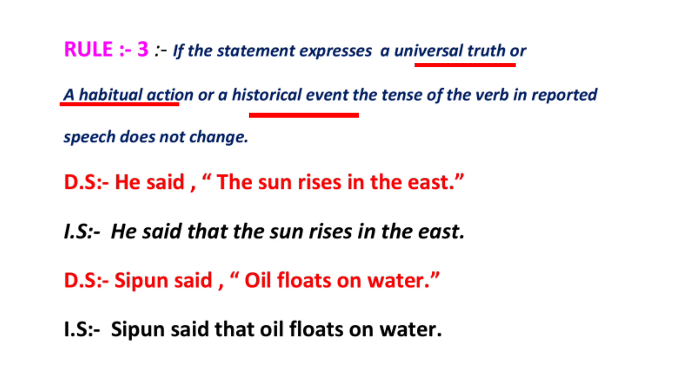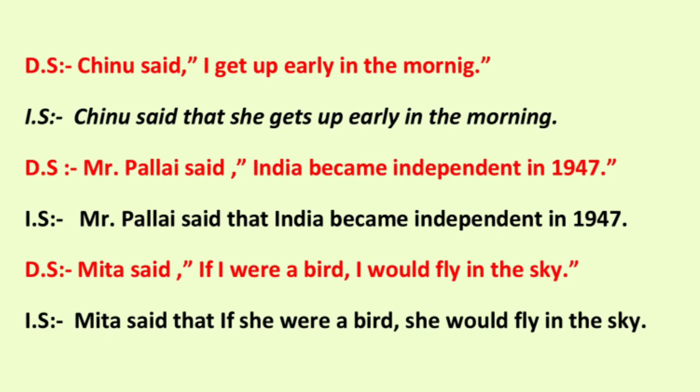For example: He said that the sun rises in the east — it is a universal truth, a general truth — no change. Only connected by 'that' and ending with full stop. Sipun said, 'Oil floats on water' — it is a scientific truth — Sipun said that oil floats on water, no changes. Another example: Chinoo said, 'I get up early in the morning' — it is a habitual action. In 1947 — it is a historical event. In indirect speech: Mr. Palai said that India became independent in 1947 — no changes, only 'that' is added.